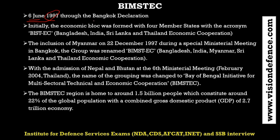BIMSTEC was established on June 6th through the Bangkok Declaration. Initially the economic block was formed with four members: Bangladesh, India, Sri Lanka, and Thailand. Then on December 22nd, 1997, Myanmar joined the group, so the name became BIMSTEC - Bangladesh, India, Myanmar, Sri Lanka, and Thailand Economic Cooperation.